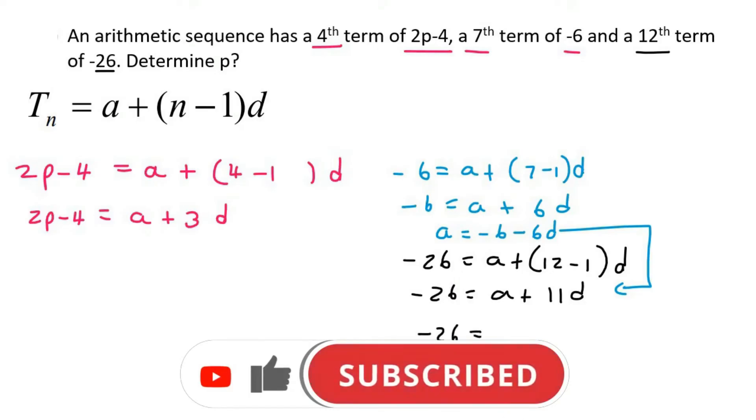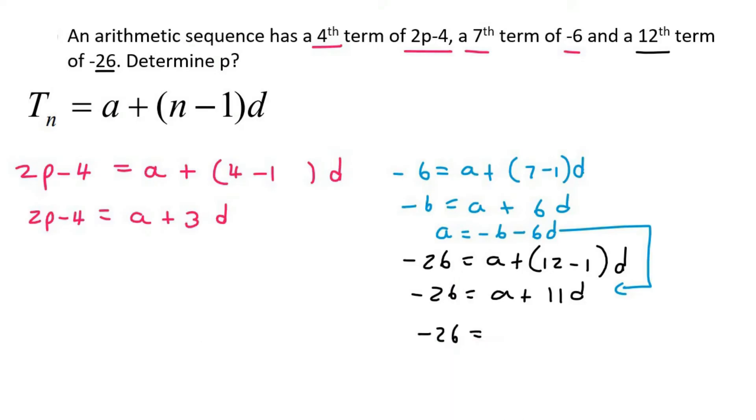And so that's going to be minus 26 equals minus 6 plus 5d. And so if we do all the maths, we would eventually find that d is negative 4.